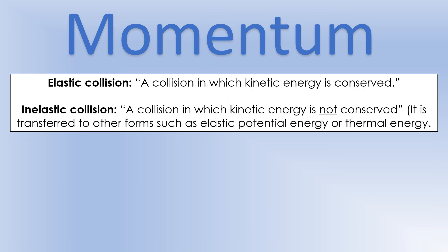There are two types of collisions in physics. Elastic collisions are those in which kinetic energy is conserved — momentum is conserved in all collisions, but in elastic collisions kinetic energy is also conserved, so kinetic energy at the start equals kinetic energy at the end. Most collisions are inelastic — kinetic energy is not conserved and is less at the end, having been converted to other forms such as thermal energy or elastic potential energy, like when a car crashes and changes shape.